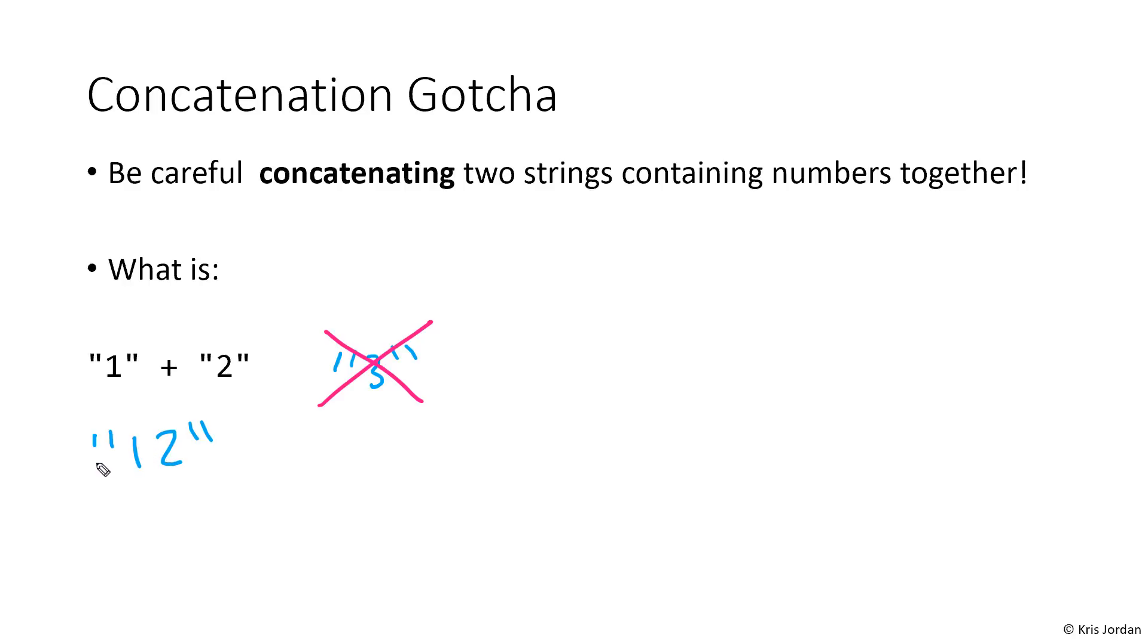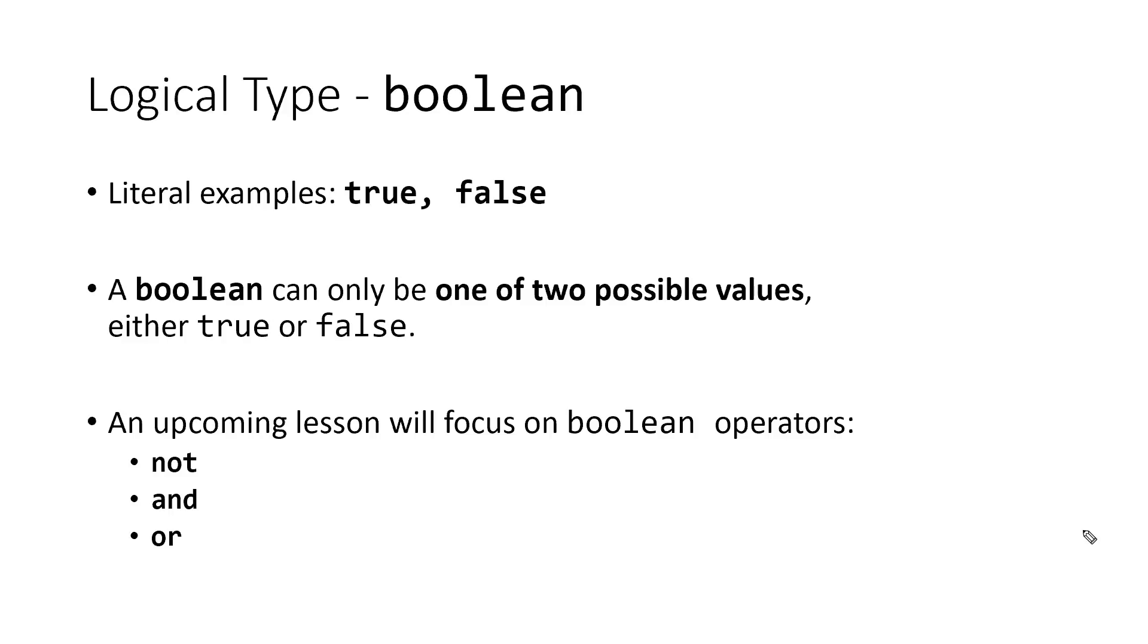The last logical type we'll talk about is the boolean type. It's pretty simple. There can only be two possible values for boolean types. A boolean can either be true or it can be false. With these boolean values there are some operators specific to it. For example, the not operator. If we say something is not true, and the exclamation point is the not operator, then it becomes a false value.